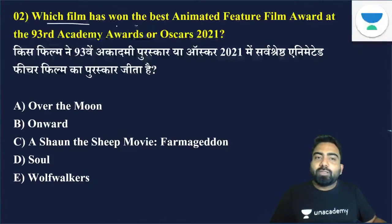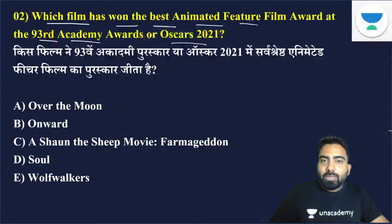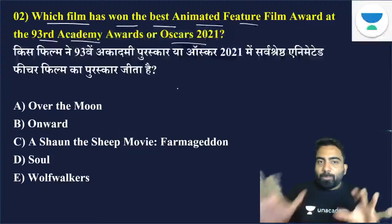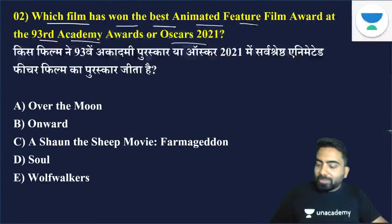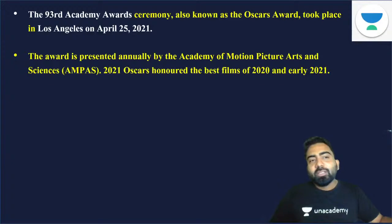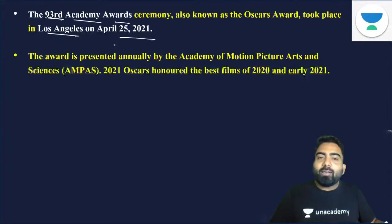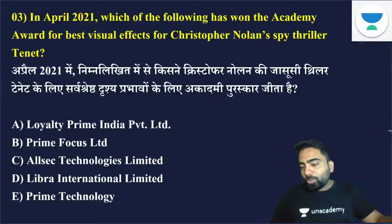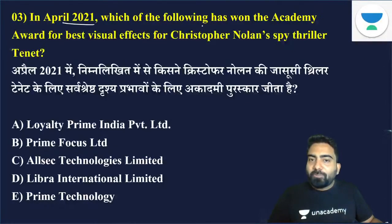Which film has won the Best Animated Feature Film Award at the 93rd Academy Oscar Award 2021? We have five options. The 93rd Academy Award or Oscar Award was held in Los Angeles on 30th April. The Best Animated Movie award went to Soul, and the Best Movie went to Nomadland.